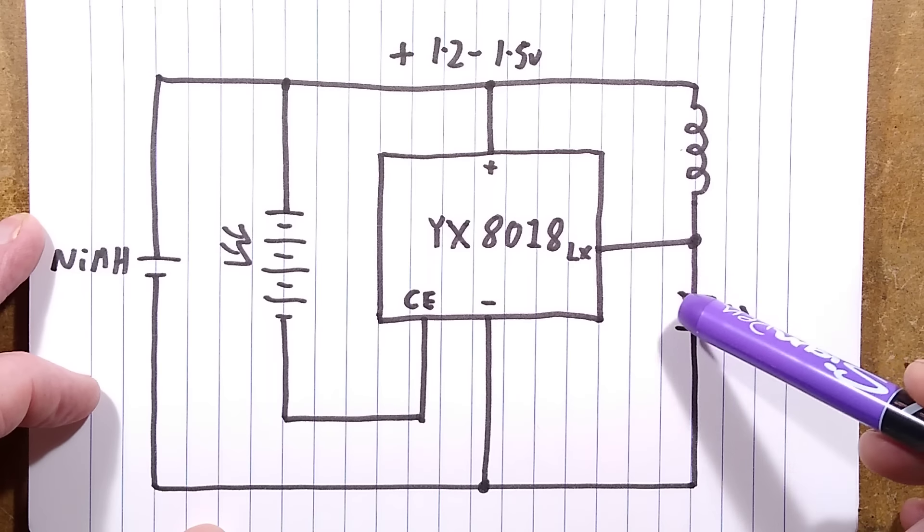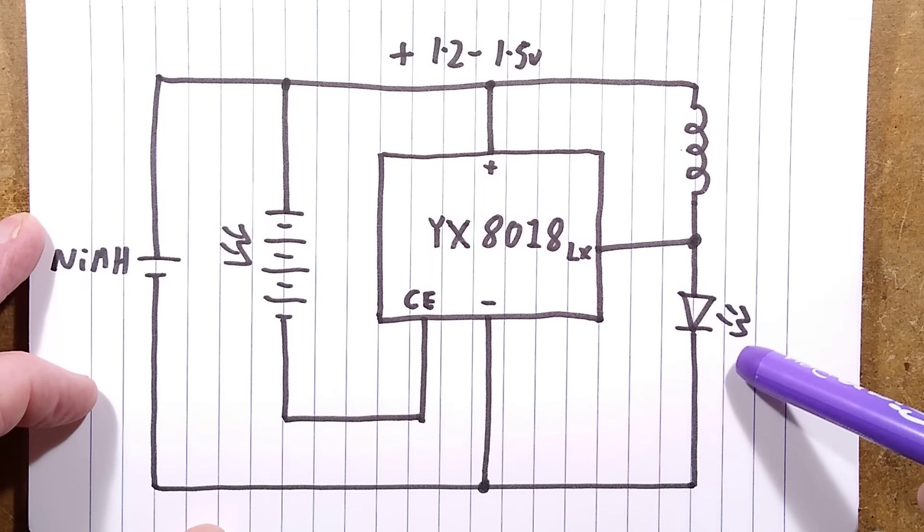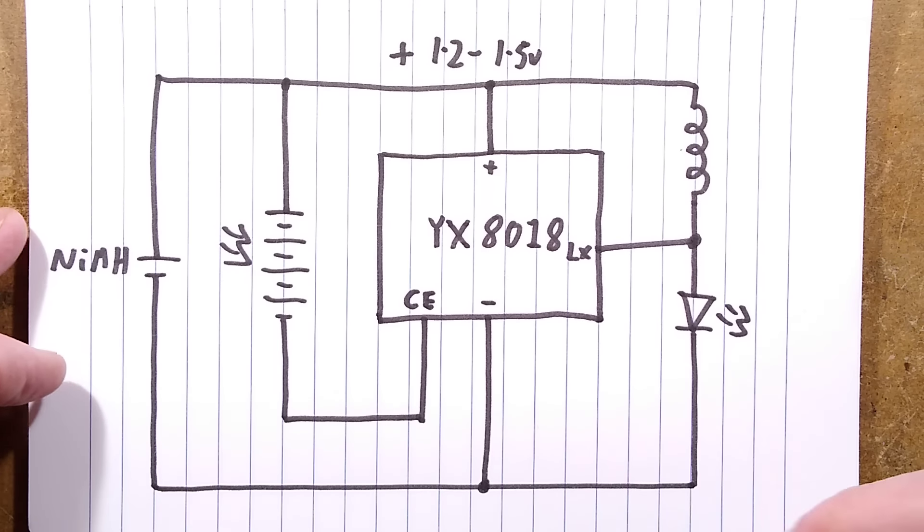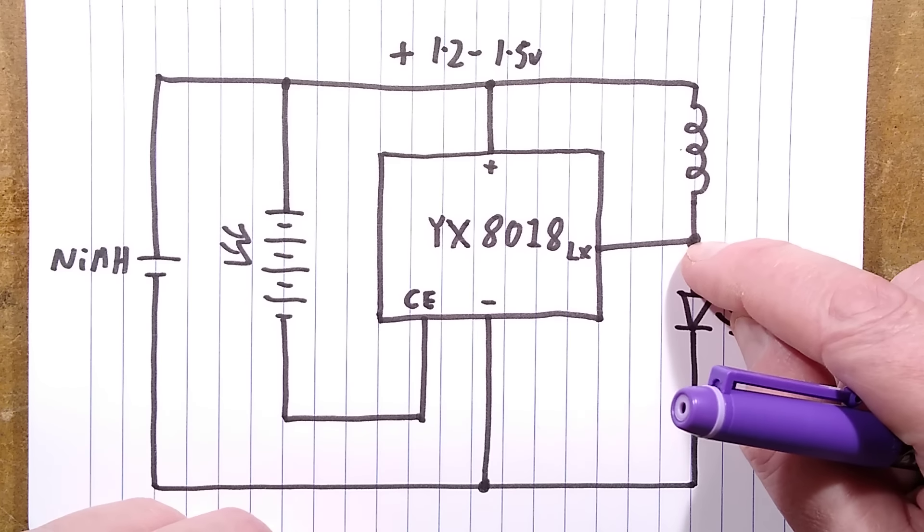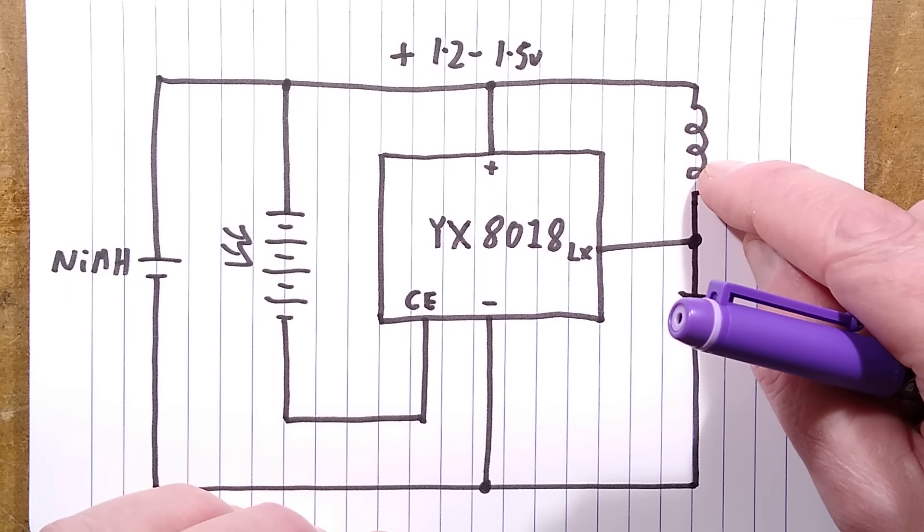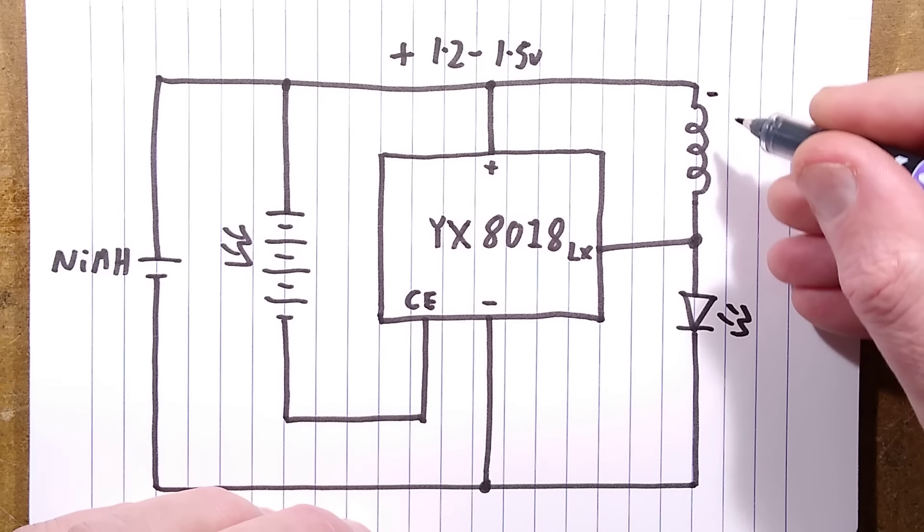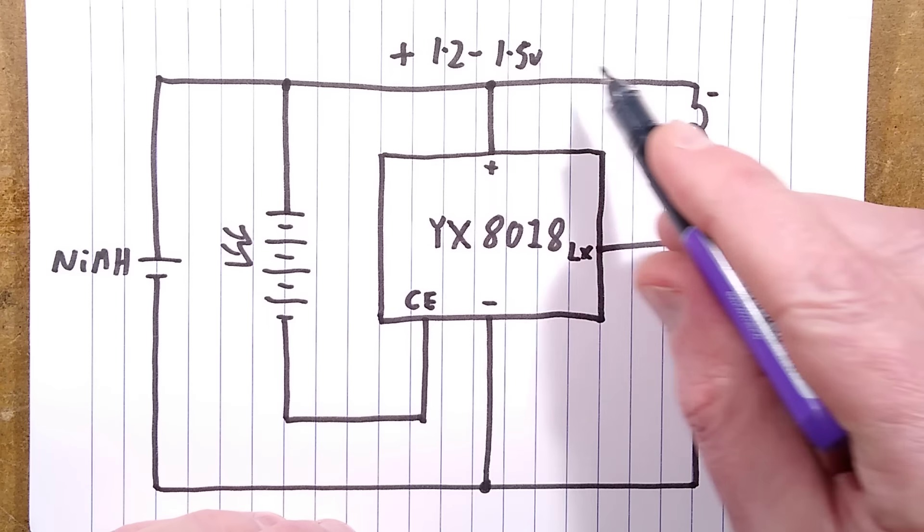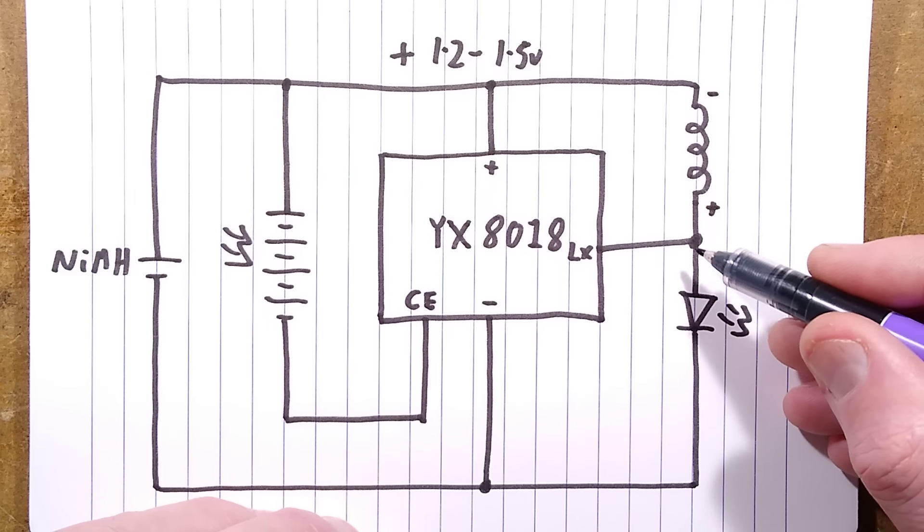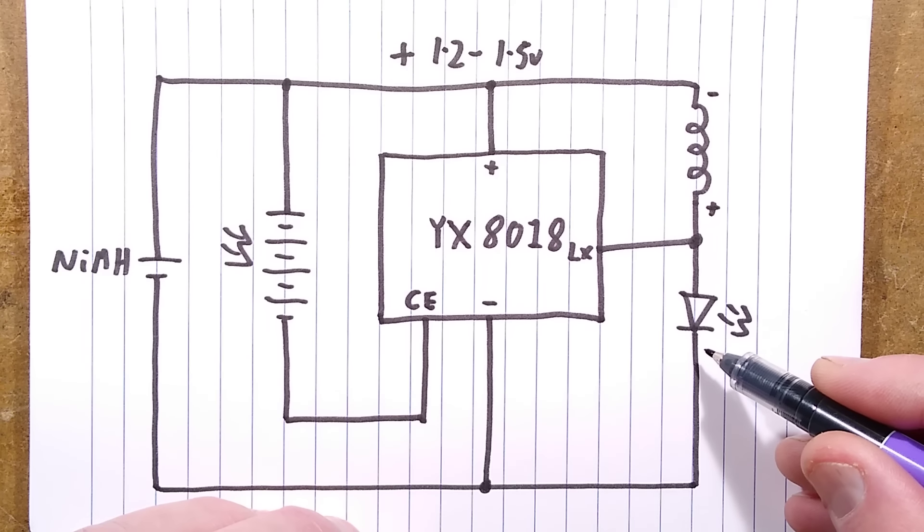But as soon as it starts pulsing that, it pulls this end negative of the inductor and builds up a magnetic field. When the magnetic field collapses, this end goes negative and this end goes positive, and it adds effectively in series with the cell, and it's a high enough voltage that can actually drive the LED.